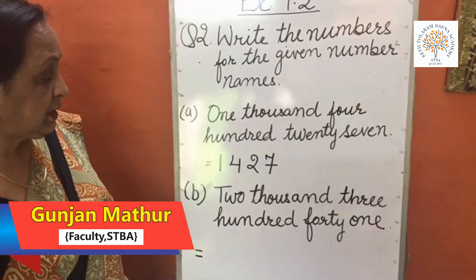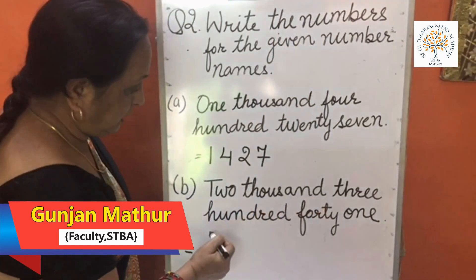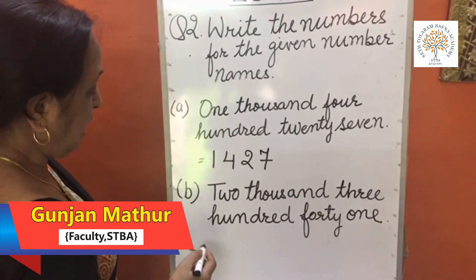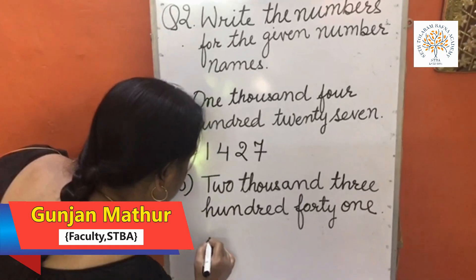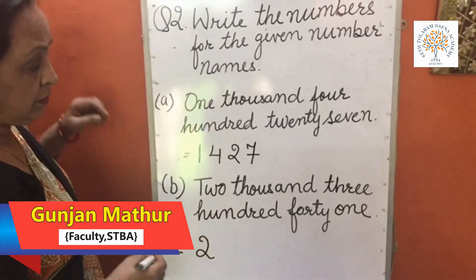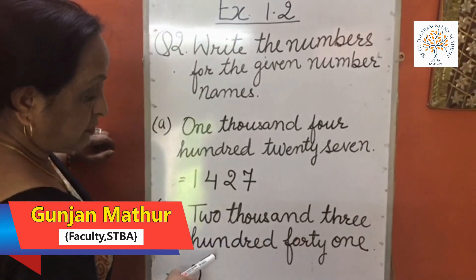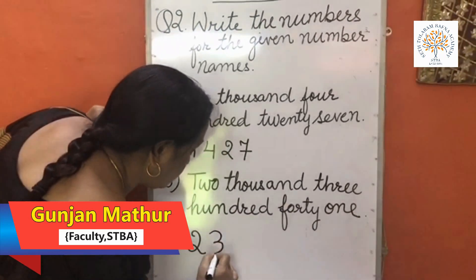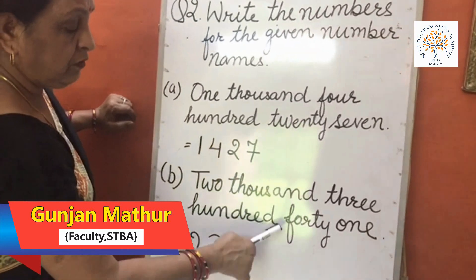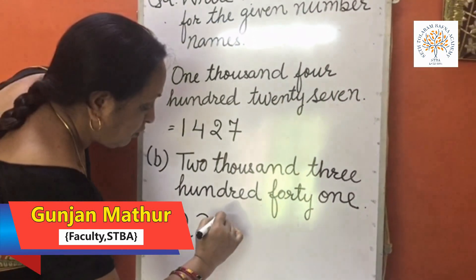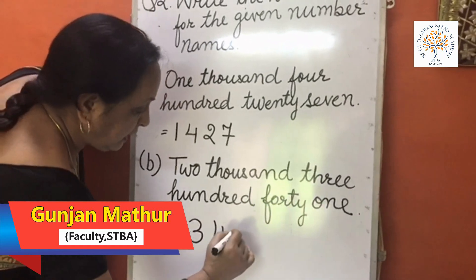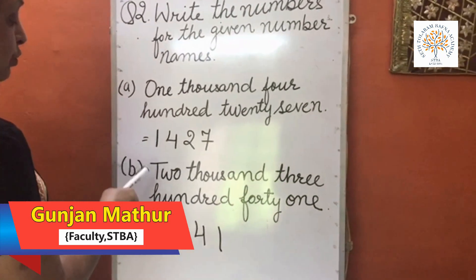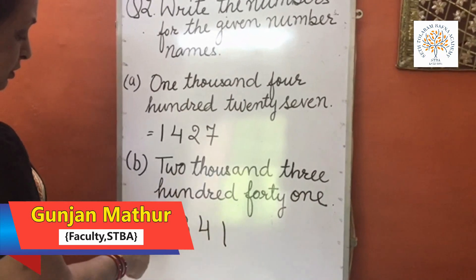Our next number name is two thousand three hundred and forty-one. At the 1000s place we have 2, so we write 2 at the 1000s place. Next is 300, so we write 3 at the 100s place. Next is 41, so we write 4 at the 10s place and 1 at the 1s place. The number for two thousand three hundred and forty-one is 2341.